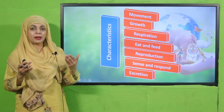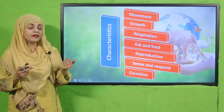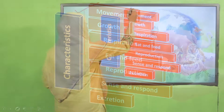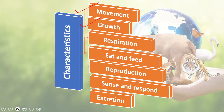Let's quickly recap the characteristics of living things — animals and plants: movement, growth, respiration, eating and feeding, reproduction, sense and respond, and excretion. These are the characteristics of living things — plants and animals.